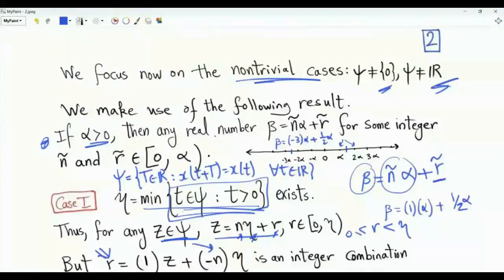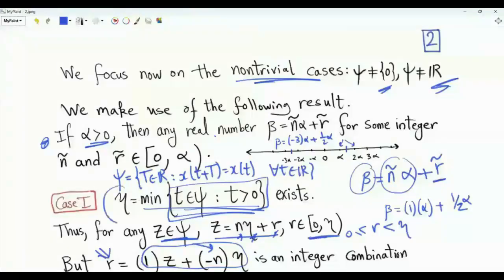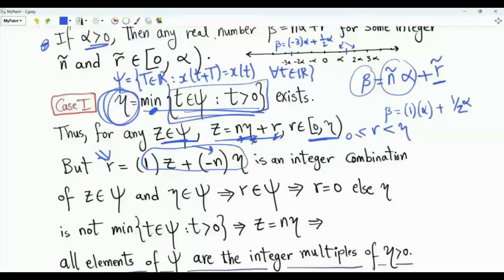Eta is an element in epsilon — specifically the minimum of the positive elements of epsilon — and z is a chosen element from epsilon. What we have is an integer combination: 1 times z plus minus n times eta. This equals r. We know that if two elements are in epsilon, then any integer combination of them is in the same set, so r is in epsilon. But if r is in epsilon, its only possible value is zero, because eta is the minimum of the positive elements of epsilon and r is strictly less than eta. So r must be exactly zero, meaning all elements in epsilon can be expressed as integer multiples of eta. This case gives us periodic signals that have a fundamental period.